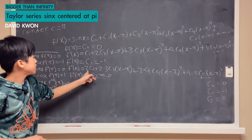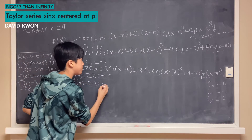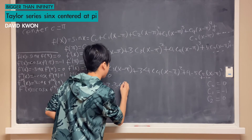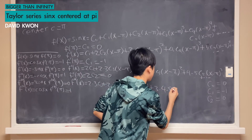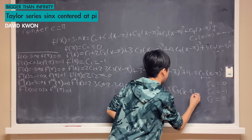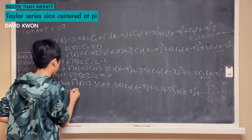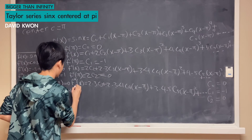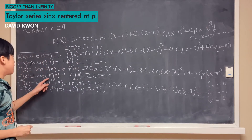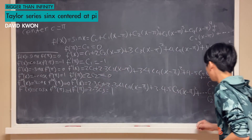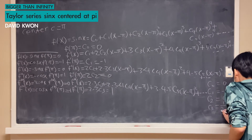Differentiating again, we get f‴(x) equals 2·3·c₃ plus 2·3·4·c₄·(x−π) plus 3·4·5·c₅·(x−π)² plus dot dot dot. Setting x equal to π, we get f‴(π) equals 2·3·c₃. Since f‴(π) equals 1, our c₃ equals 1 over 2·3.